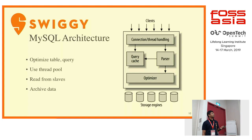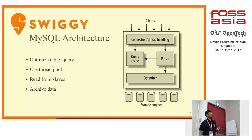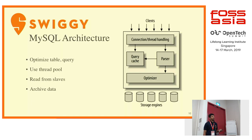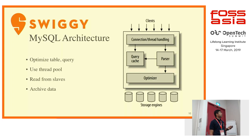This is the architecture diagram of MySQL. When a client connection comes in, after authorization and authentication the client is connected. Whenever a query comes, it goes to the parser. After the parser, it goes to the optimizer, which interacts with the storage engine to fetch the result. The same path continues for the return of data back to the client.